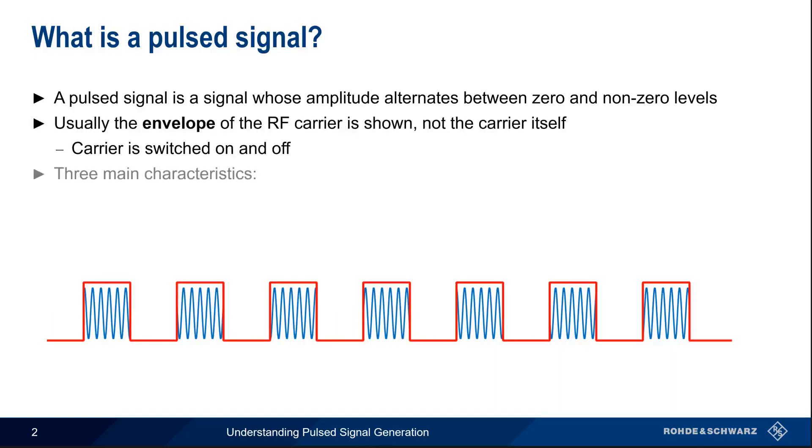Pulse signals have three different sets of characteristics or parameters: the pulse envelope, that is the amplitude or shape of the pulse; pulse timing, or how far apart the pulses are; and pulse modulation, or what happens with the frequency and phase of the carrier during the pulse.